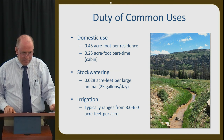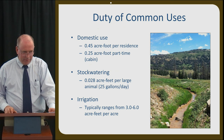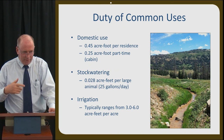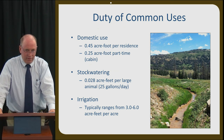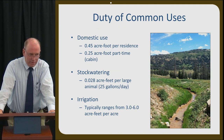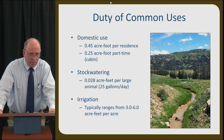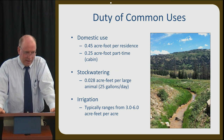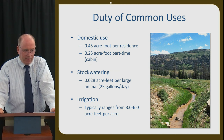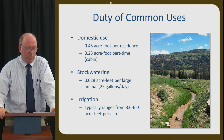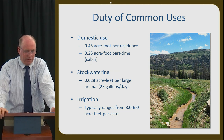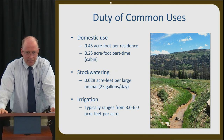The domestic and irrigation duty values are both annual numbers. The stock watering value of 0.028 acre feet is also an annual number, based on 25 gallons per day — you do the math and multiply it out to get that number.